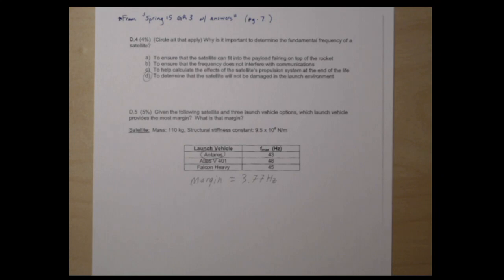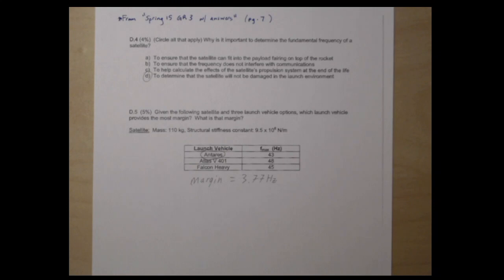The first question says circle all that apply: why is it important to determine the fundamental frequency of a satellite? Part A says to ensure that the satellite can fit into the payload fairing on top of the rocket. This is not the right answer because fundamental frequency is a relationship between stiffness and mass — not volume. This question about fitting into the payload fairing is a volume question, so that one doesn't apply.